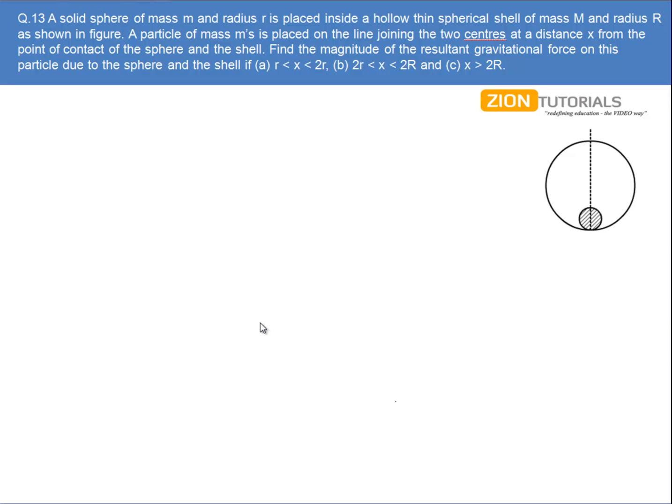A solid sphere of mass m and radius r is placed inside a hollow thin spherical shell of mass M and radius R as shown in the figure. A particle of mass m is placed on the line joining the two centers at a distance x from the point of contact of the sphere and the shell. Find the magnitude of the resultant gravitational force on this particle due to the sphere and the shell.